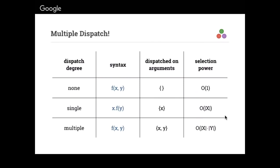Back to the selection power diagram. It's really just: for O(1) code, how many possible implementations could that code actually be calling? With no dispatch, it's one — what you see is what you get. With single dispatch, it's linear in the number of concrete types of one argument. With multiple dispatch, it's proportional to the product of possible selections of each argument — an exponential increase in power.